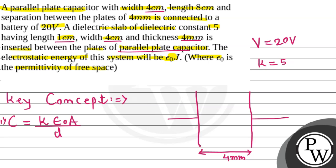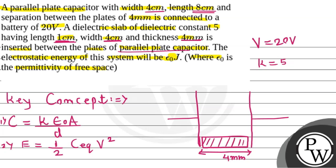We will use the second important formula: the energy stored by a capacitor is equal to one-half times C-equivalent times V squared. The dielectric slab has length 1 cm, width 4 cm, and thickness 4 mm. The total length of the capacitor is 8 cm, and the dielectric only covers 1 cm of that length — so the dielectric is inserted for only 1 cm of the capacitor length.